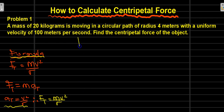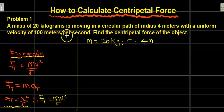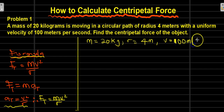Now let us take an example and see how we can solve using this formula. A mass of 20 kilograms — we have m equals 20 kilograms — is moving in a circular path of radius 4 meters. We have radius r equals 4 meters, with a uniform velocity of 100 meters per second. Find the centrifugal force of the object — find F of t.